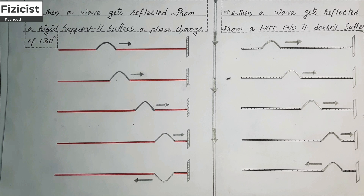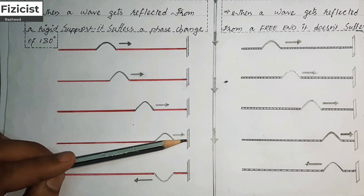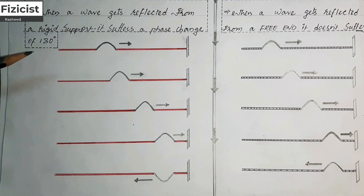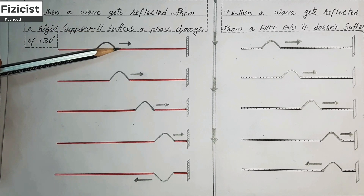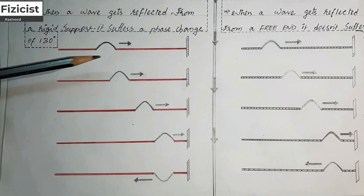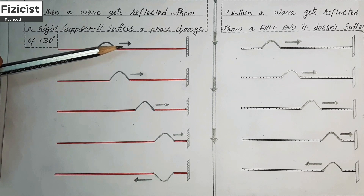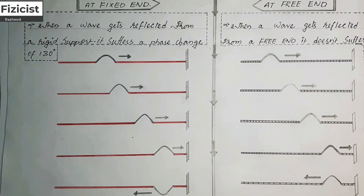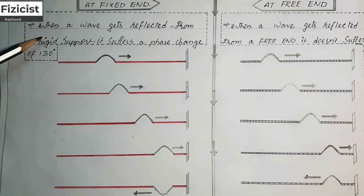You may wonder why there is an upward force on the rigid support: because in the beginning we gave an upward jerk, so every upcoming particle experiences a force in the upward direction, and in the same manner there is an upward force on the fixed end. So the statement is: when a wave gets reflected from a rigid support, it suffers a phase change of 180 degrees.